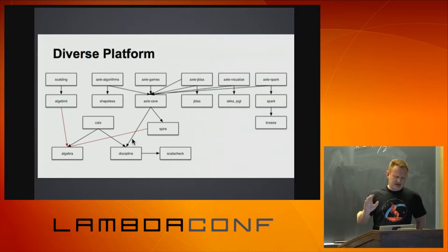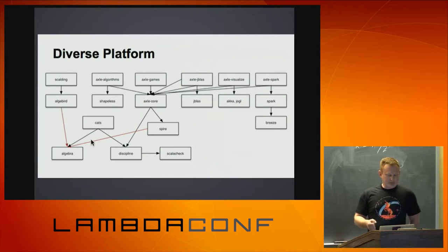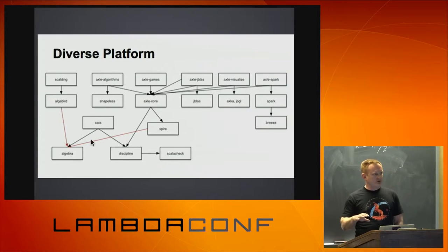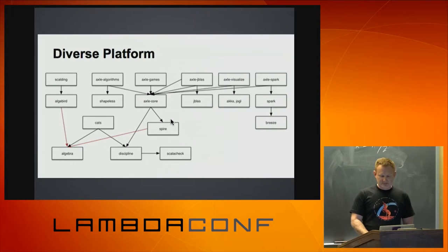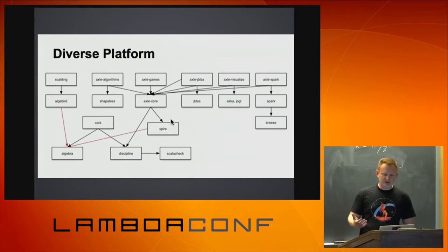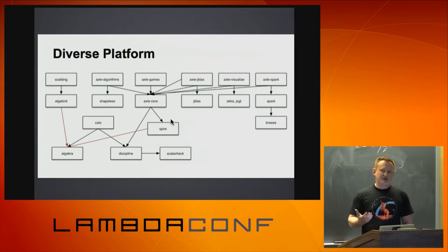Both Algebra and Spire will be factored in terms of the project called Algebra at some point soon, and Cats is already here. At some point I would actually love to get rid of Axle core and just depend on these fundamental libraries. Over on the right, I would also love to get this stuff running in a distributed fashion — for instance, on Spark. I've begun a few months ago defining type class witnesses for RDDs — those are Spark's distributed datasets. Things like Functor: a Spark RDD has a map function, so why not define a Functor for an RDD?